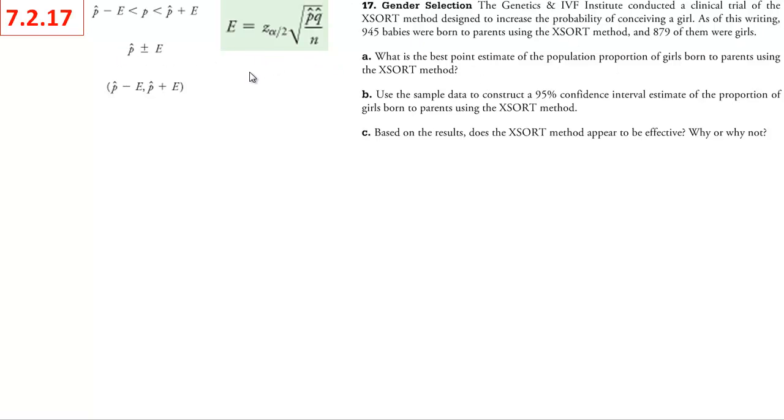So all we have to do is calculate p hat. To calculate p hat, it is very simple. If you remember your basic probability, p hat is just good over total, which you can think of as x, your number of successes, over n being your sample size. So in this case, p hat is number of girls because that is considered a success because we are looking at the proportion of girls, 879 over n, our sample size, and there were 945 total births.